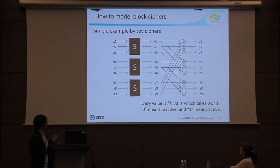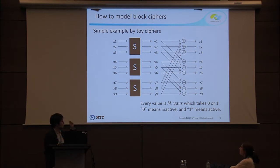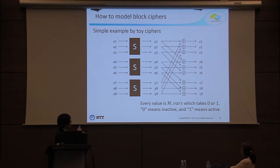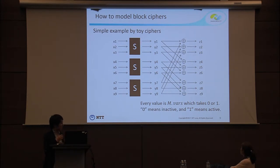In this toy example, the block length is only 9 bits. First, three 3-bit input S-boxes are applied in parallel, and the output is diffused using XOR. Every value — x, y, z — is represented by MILP variables, and each variable takes 0 or 1. Here 0 means inactive and 1 means active. Next, we explain how to represent the relationship between x and y from the S-box.